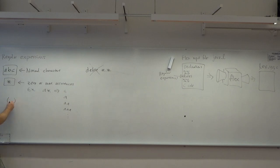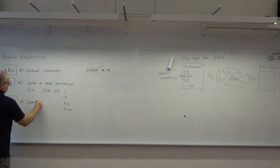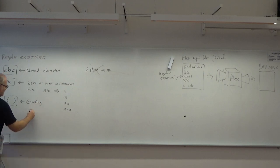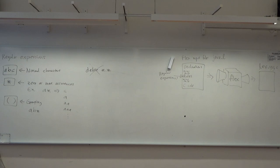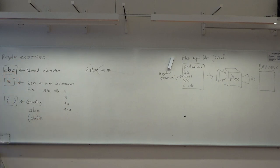You can use parentheses to group things together. So for example, if I write (ab)*, that would mean zero or more occurrences of the pair ab: so it's either empty, or ab, or abab, or ababab, and so on.